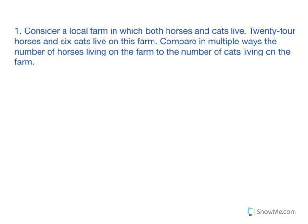Consider a local farm in which both horses and cats live. 24 horses and 6 cats live on the farm. Compare this. Quantitative reasoning is using numbers to discuss things. Looking at this, we know we have 24 horses to 6 cats, so we can compare them using ratios.